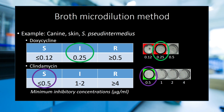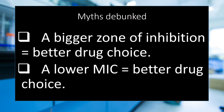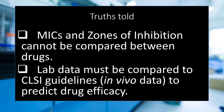It is common for people to lean towards selecting the drug with the lower MIC. However, in this example, you can appreciate that the drug with the lower MIC was not the best choice. Let's debunk some common myths about AST interpretation. A bigger zone of inhibition equals a better drug choice — nope, not true. A lower MIC equals the better drug choice — again, not true. MICs and zones of inhibition cannot be compared between drugs. Laboratory data must be compared to CLSI guidelines, which are based on in vivo data, to predict drug efficacy.